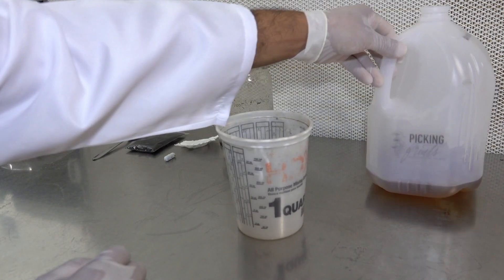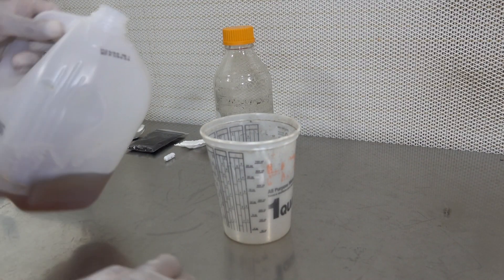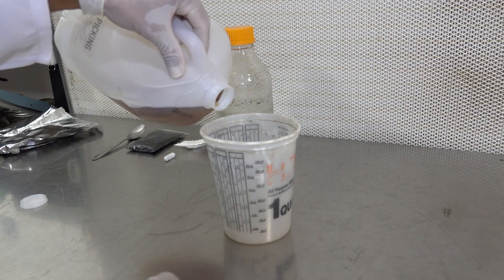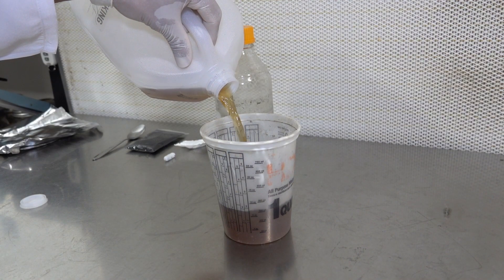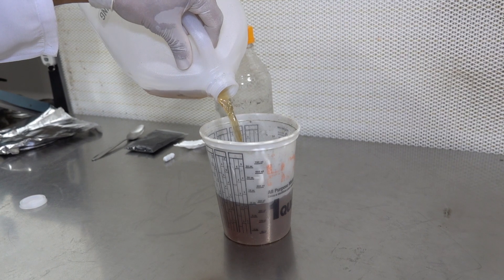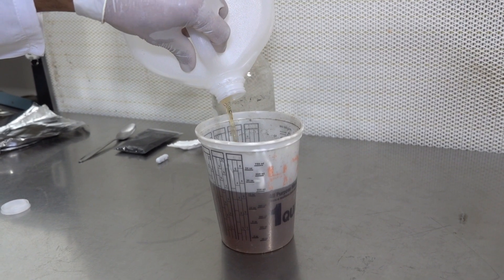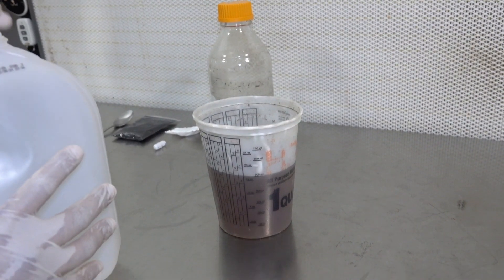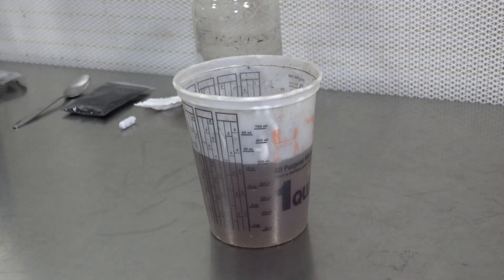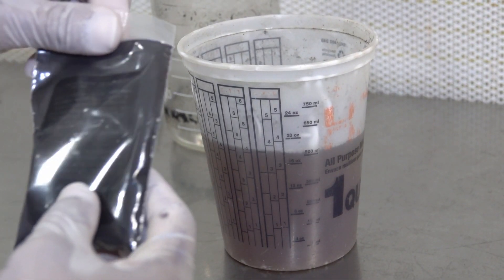So the first step here is going to be taking 500 milliliters of water. It's always better to have the water a little bit on the warmer side to allow the pre-mix to stir a little bit easier. The colder the water, the more clumping you're going to experience.